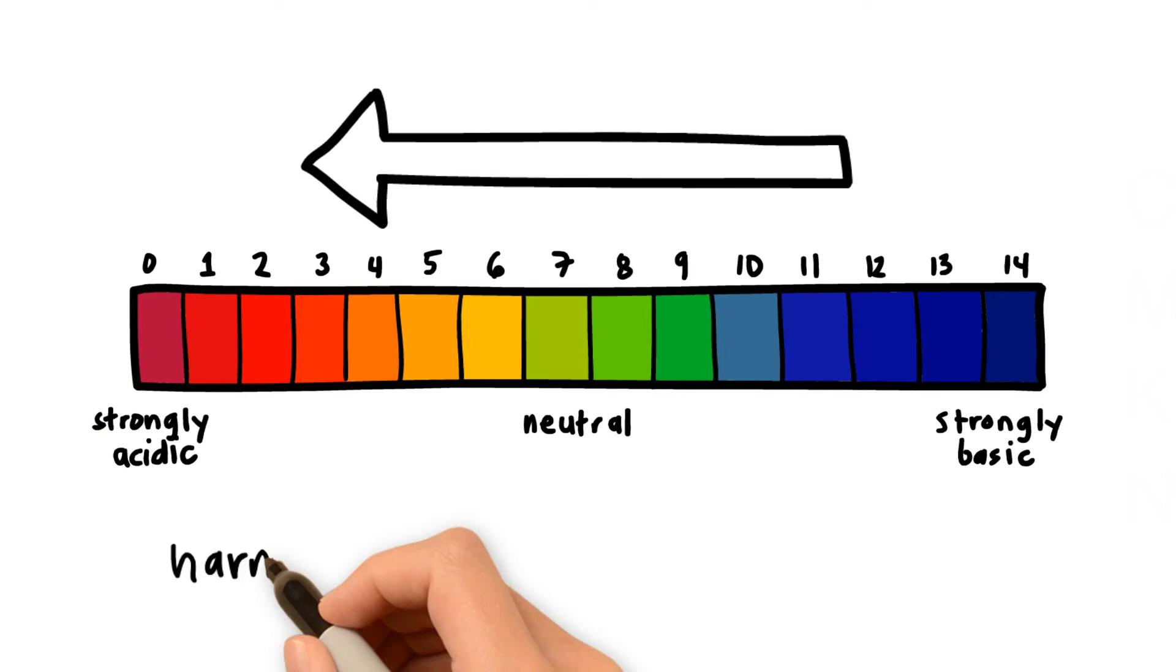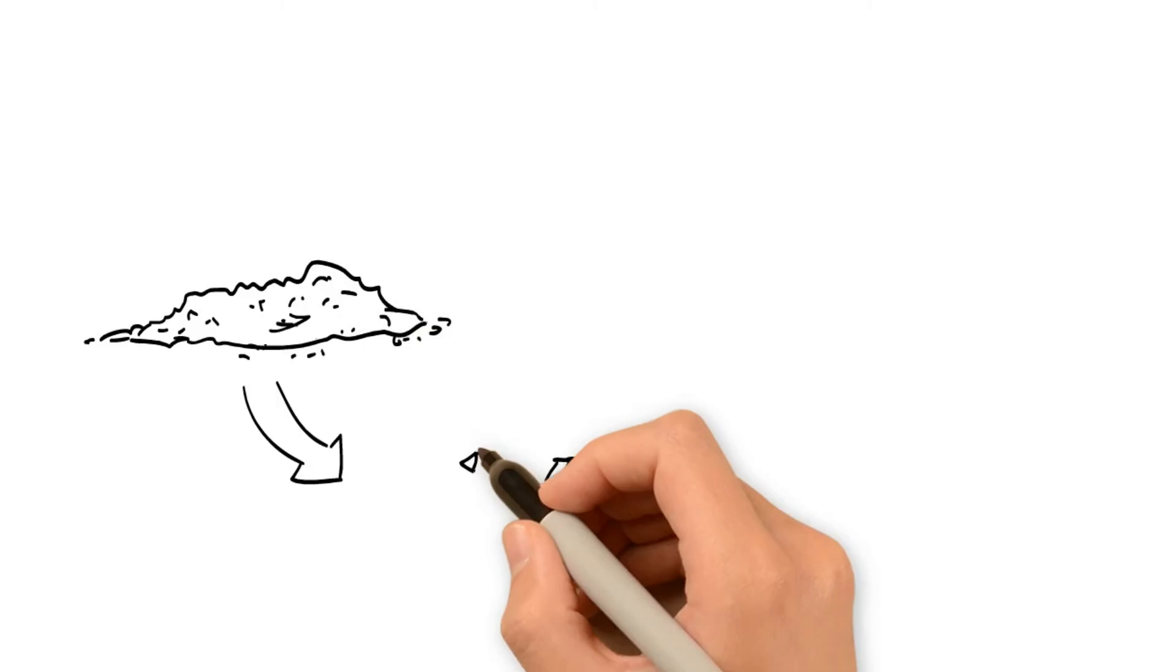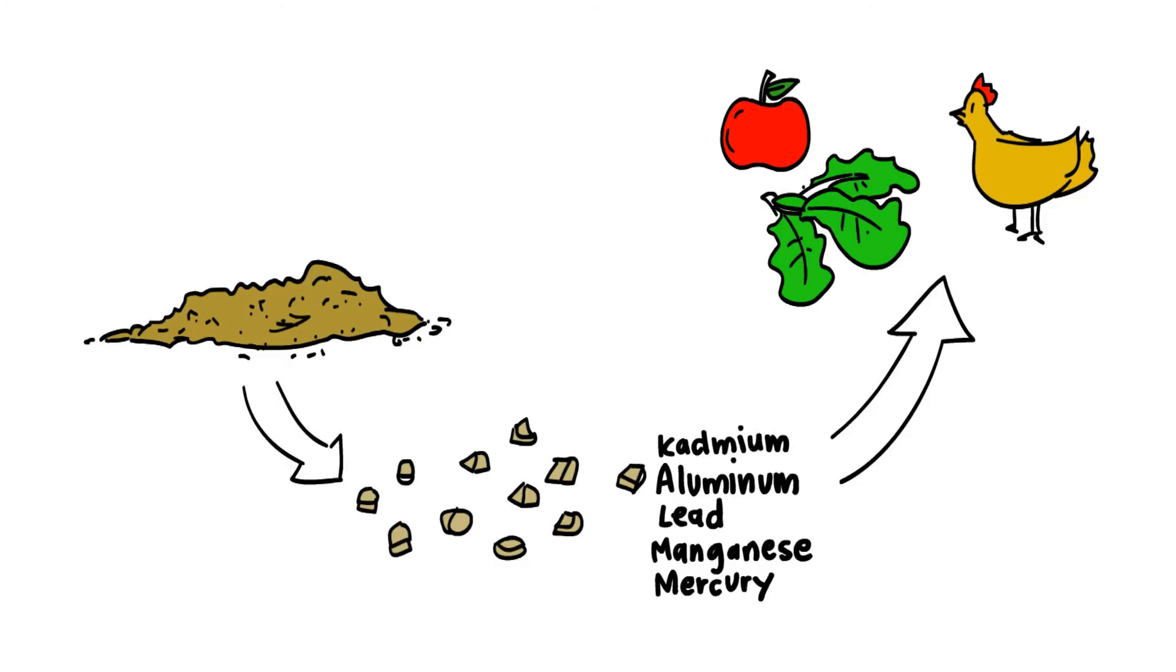This may cause metals such as aluminum, manganese, lead, mercury, and cadmium to accumulate in the food chain. In other words, organisms would then be eating and drinking reactive metal ions.